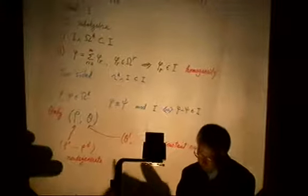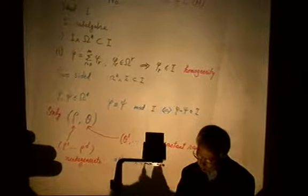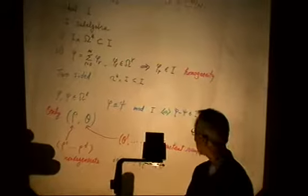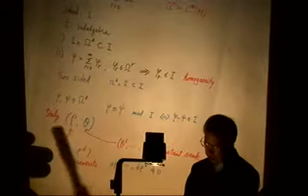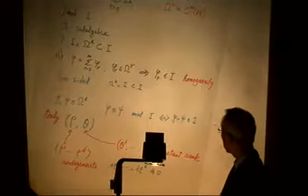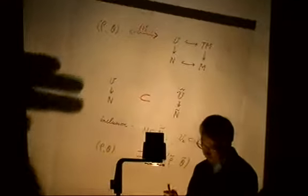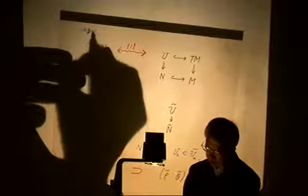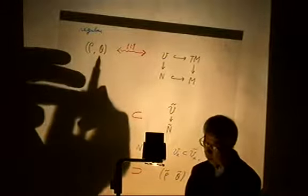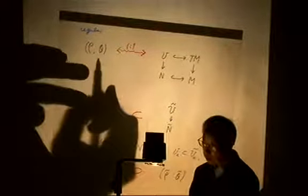Today we only consider ideals generated by functions and one-forms — a finite set of functions which are non-degenerate, meaning d-rho is non-degenerate — these are nice functions — and independent one-forms. We only consider those ideals, and we call such an ideal a regular ideal.